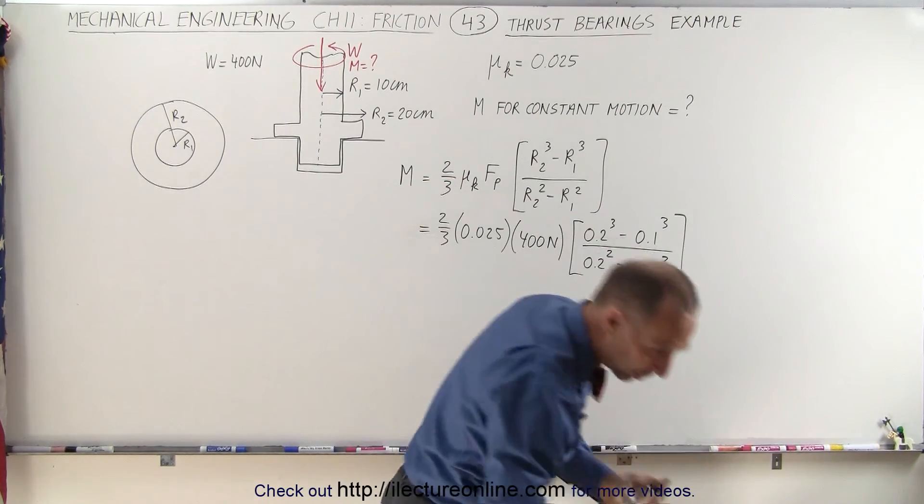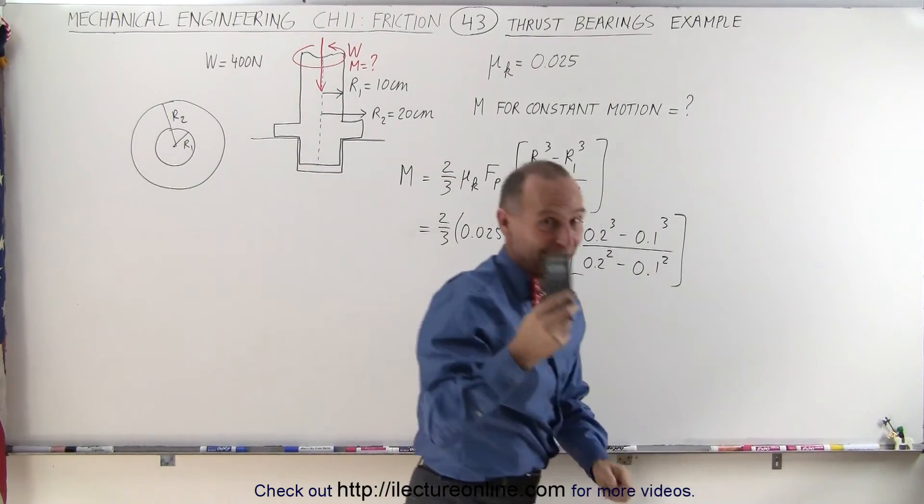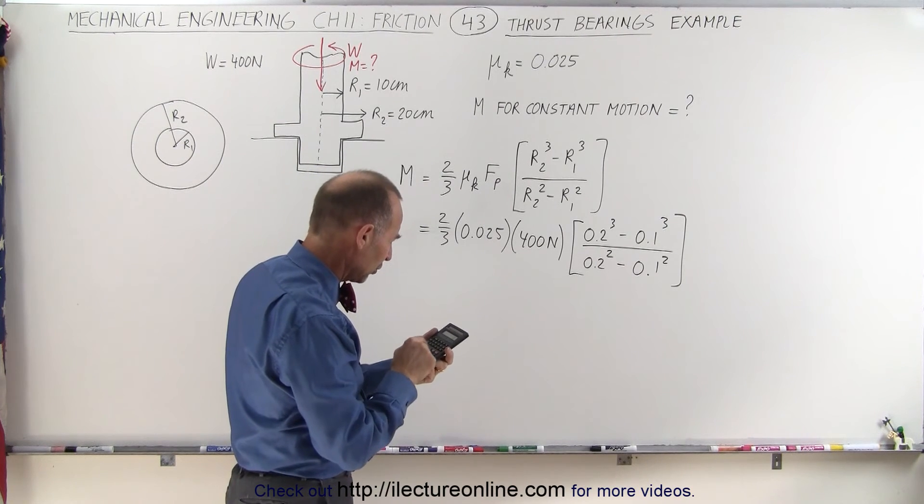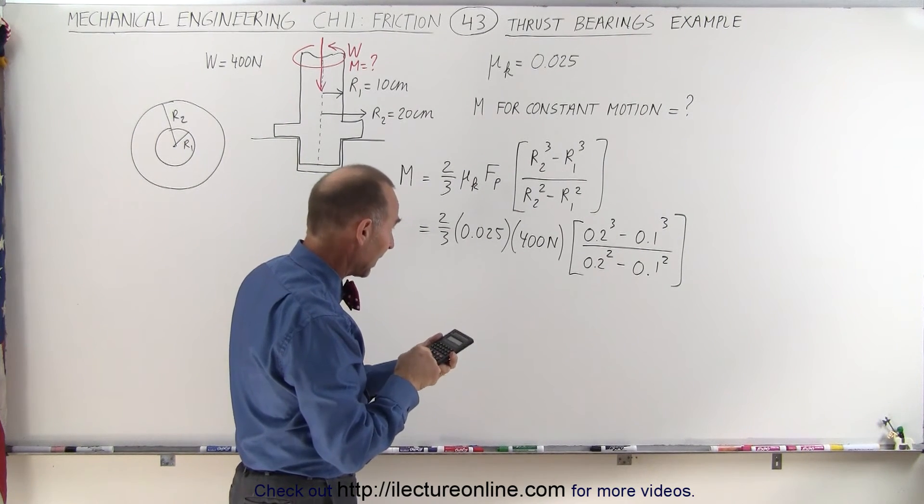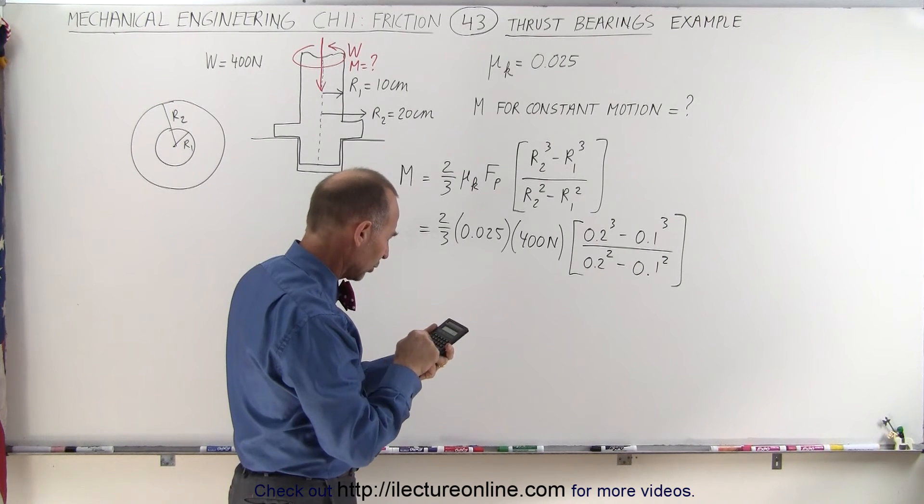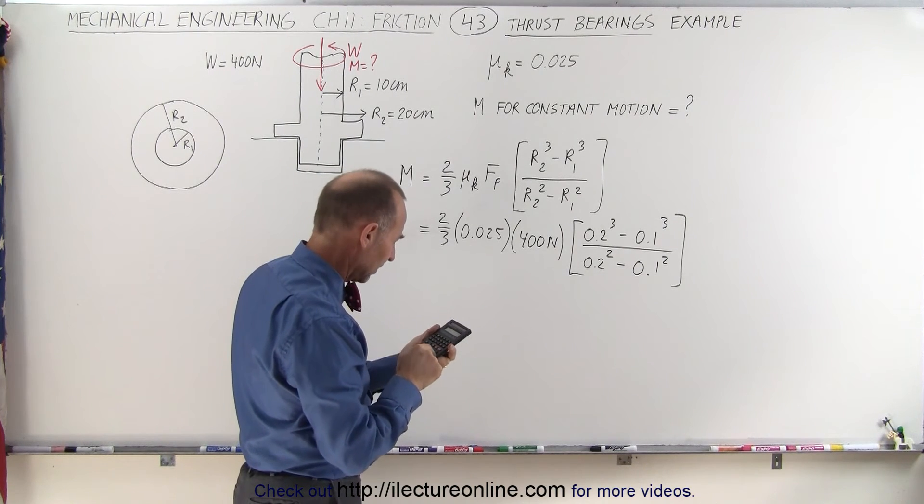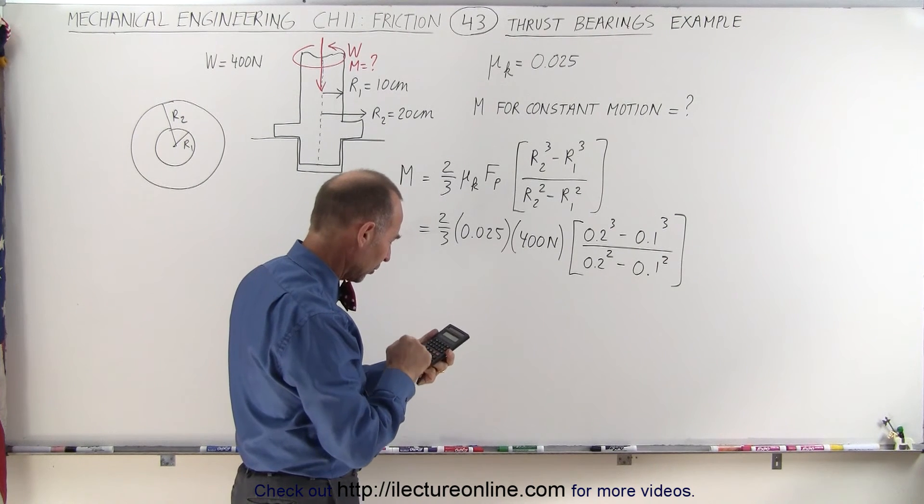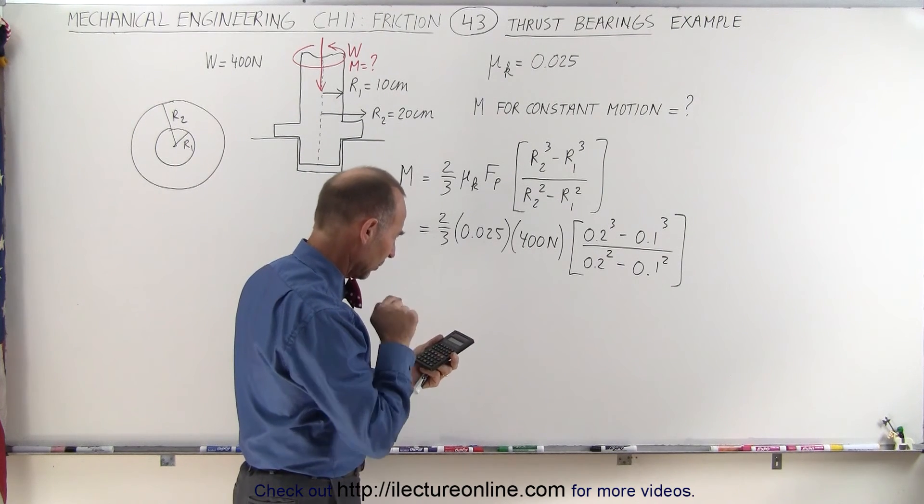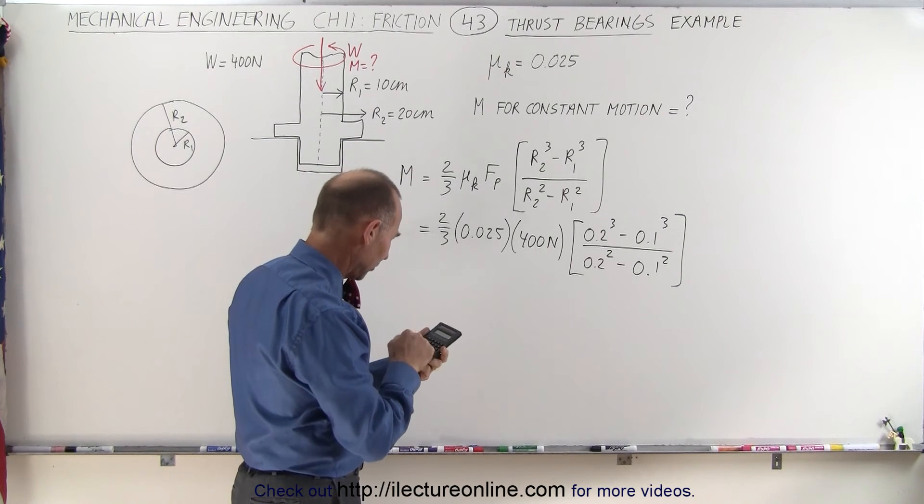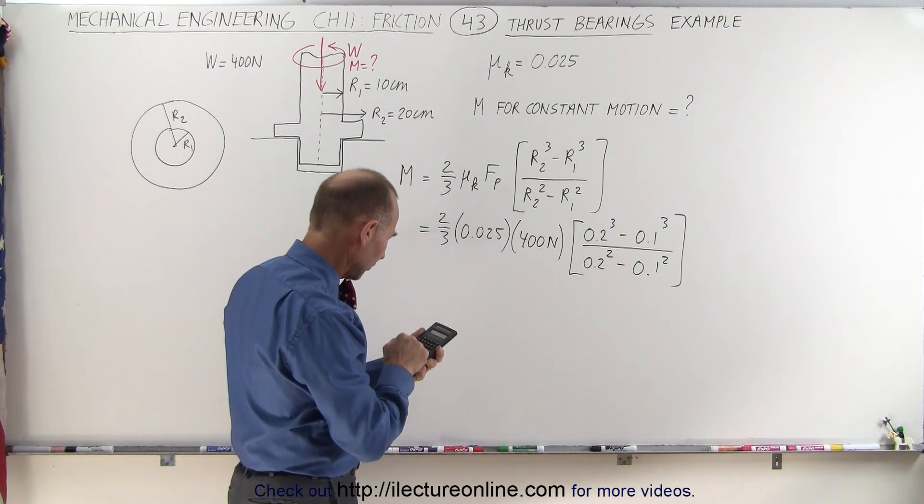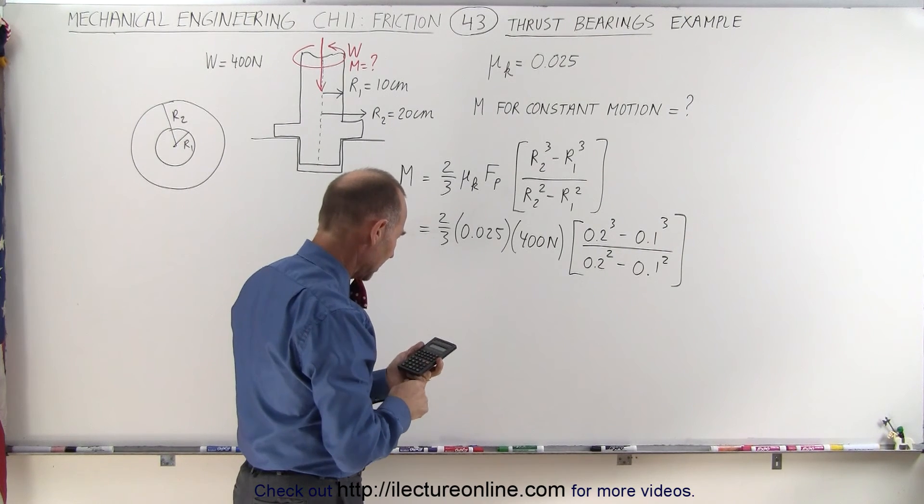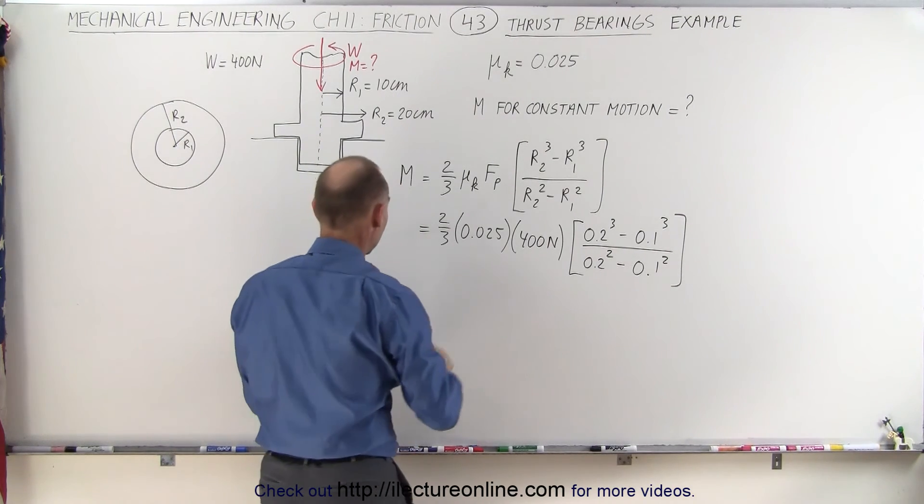Let's see what that equals to. Of course, always a good thing that we have calculators or something like that. 0.2 cubed minus 0.1 cubed divided by 0.2 squared minus 0.1 squared equals, we multiply that times 400, we multiply that times 0.025, and we multiply times 2 divided by 3,